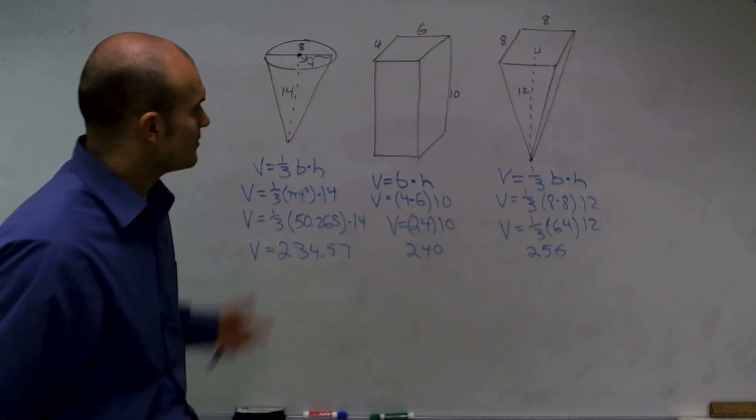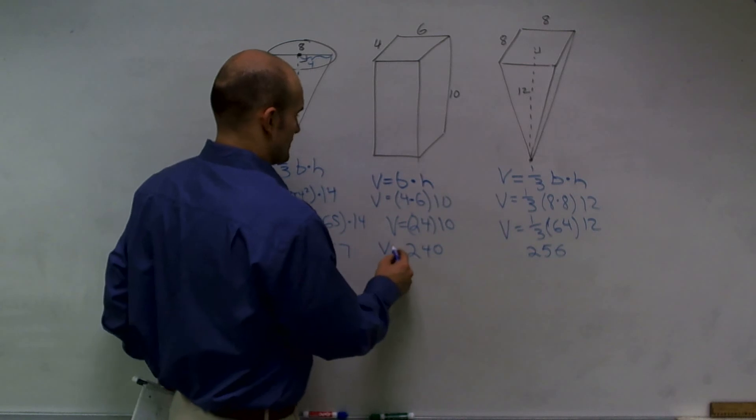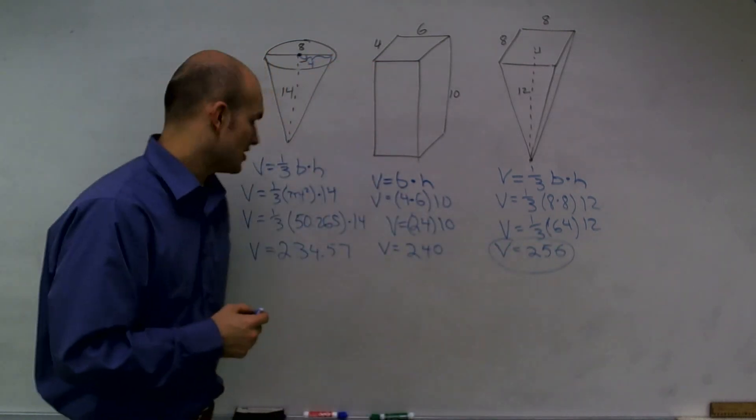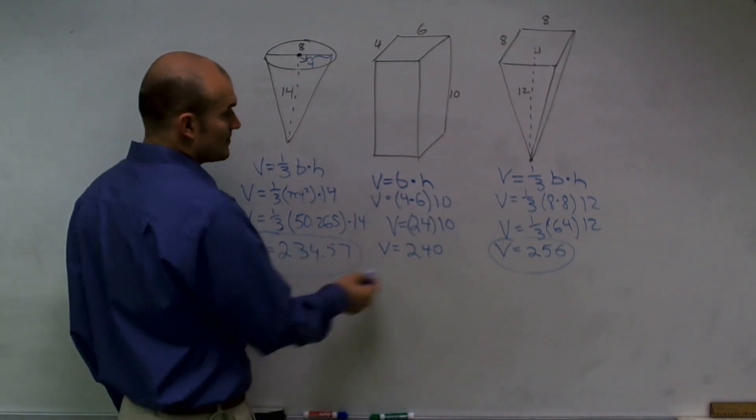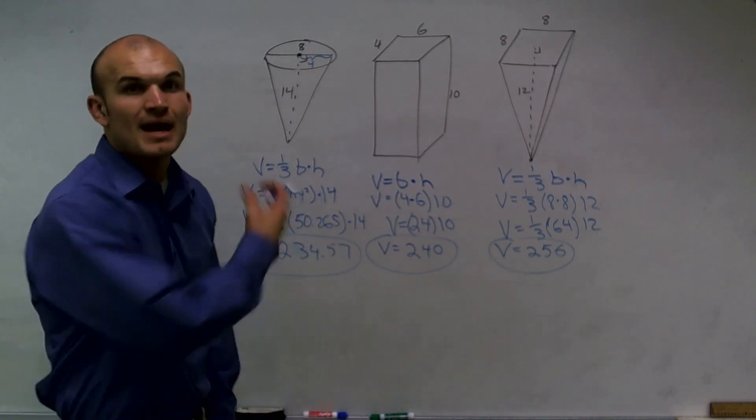So, therefore, when you want to find out which one is going to have the largest volume, this one had the largest volume, then this one had the next largest volume, and then this one has the least volume out of the three.